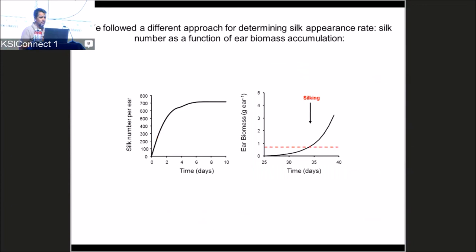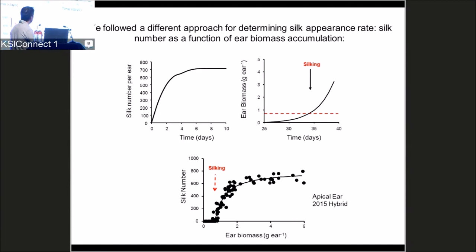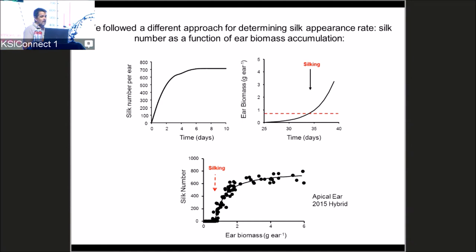We started working with this framework. Traditionally we plot silk number as a function of time and ear biomass as a function of time, with silking reached at a specific moment. Instead, we plotted silk number as a function of ear biomass accumulation, with silking reached at a specific biomass threshold and then silks start appearing. This allowed us to frame it within the model relating plant growth to ear growth — extending it from just predicting time to silking to also predicting how ear biomass accumulates and how silks appear.